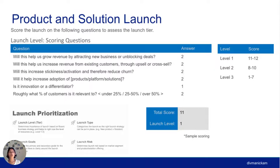The scoring questions are for the product manager and product marketing manager to work together on: Will this help grow revenue by attracting new business or unblocking deals? Will it increase revenue from existing customers through upsell and cross-sell? Will it increase stickiness or activation and reduce churn? Will it help increase adoption? Is it an innovator or differentiator? And what percentage of current customers is it relevant to? The total score tells you: level one is the highest score, level two is eight to ten, and level three is one to three. The intent is to get clarity on what needs to get done, where, and what resources and time will be allocated.